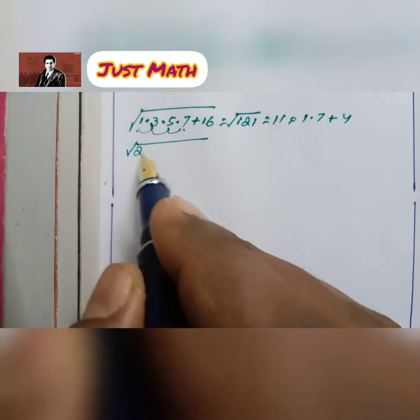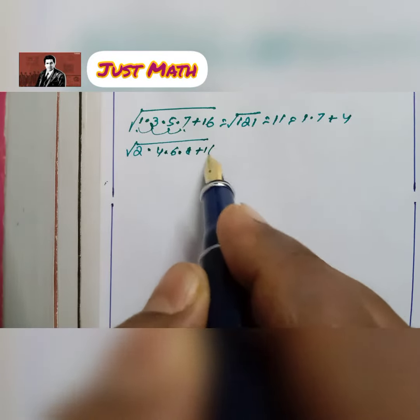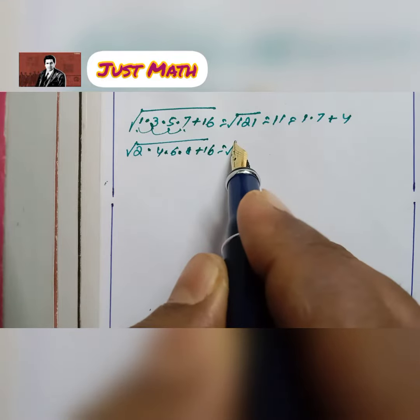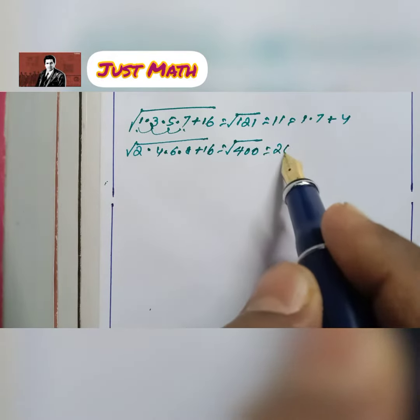Square root of 2 × 4 × 6 × 8 plus 16 which is 400. Square root of 400 is 20.